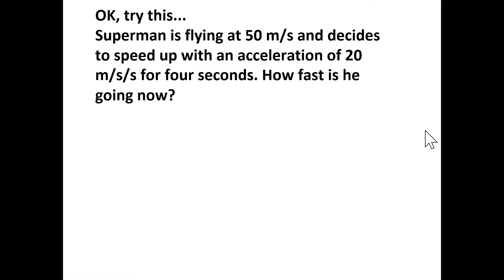Superman is flying at 50 meters per second and decides to speed up with an acceleration of 20 meters per second squared for 4 seconds. How fast is he going? The velocity is changing by 20 meters per second every second: after 1 second — 70 m/s; after 2 seconds — 90 m/s; after 3 seconds — 110 m/s; after 4 seconds — 130 m/s. So he is moving at 130 meters per second after the 4 seconds pass.